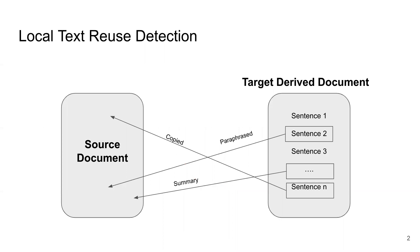When composing a new document, writers often repurpose material from existing texts. In this paper, we study methods for local text reuse detection, detecting localized regions of lexically or semantically similar text embedded in otherwise unrelated material.